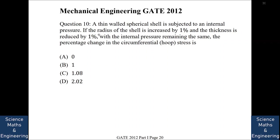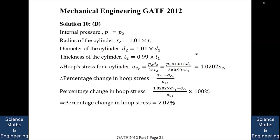A thin-wall spherical shell is subjected to internal pressure. If the radius increases by 1% and the thickness decreases by 1% with the same internal pressure, the percentage change in hoop stress is asked. Hoop stress σ = pD/2t. For the new shell, D2 = 1.01·D1 and t2 = 0.99·t1, with p2 = p1. From this we get the new hoop stress is 1.0202 times the original, giving approximately a 2.02% increase. The answer is C.